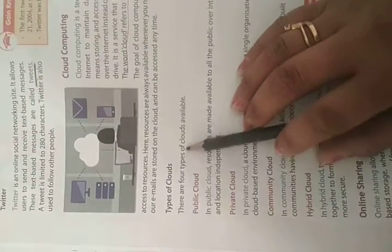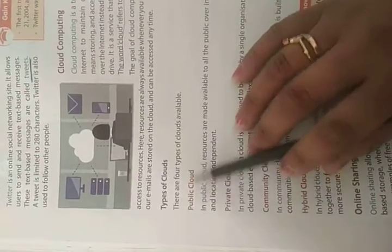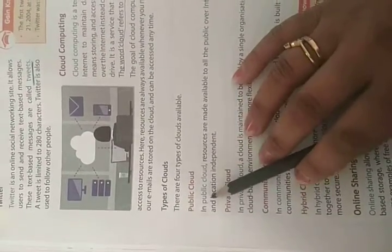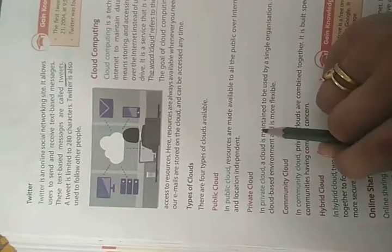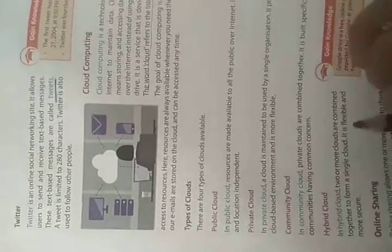There are four types of clouds available. First is public cloud. In a public cloud, resources are made available to all the public over the internet. It is inexpensive and location independent. Public cloud means that the overall internet resources are available inside the cloud, and it is inexpensive and location independent.